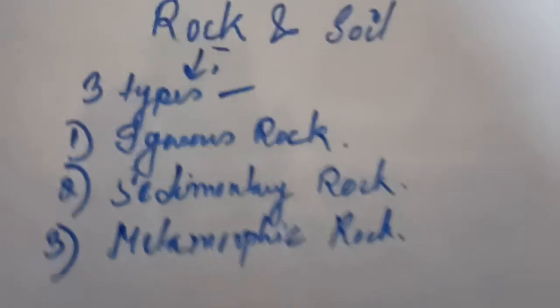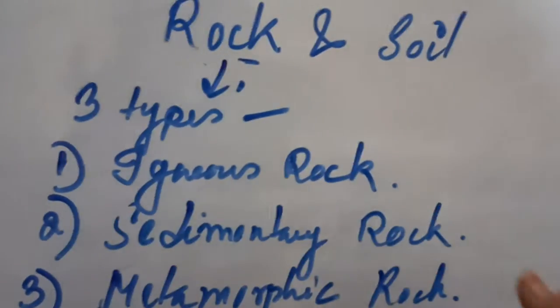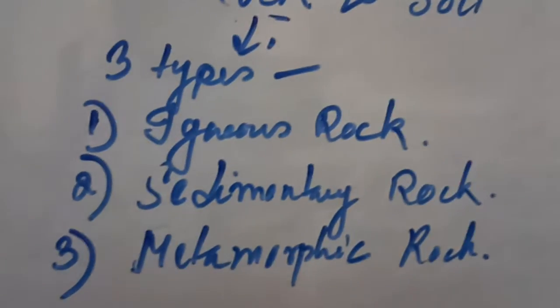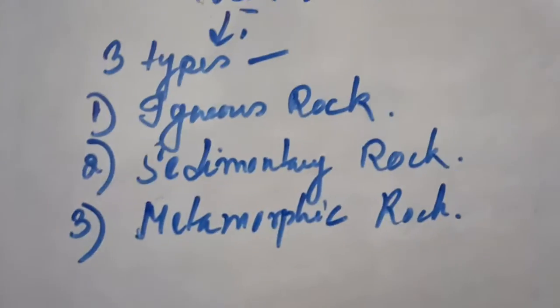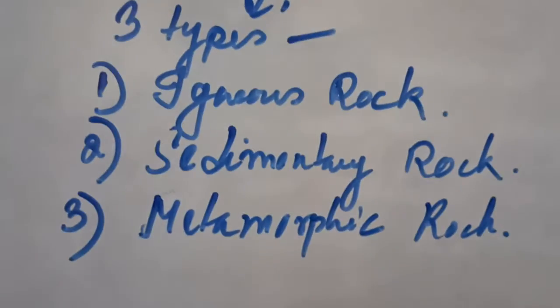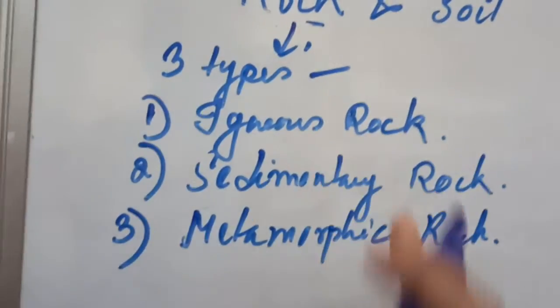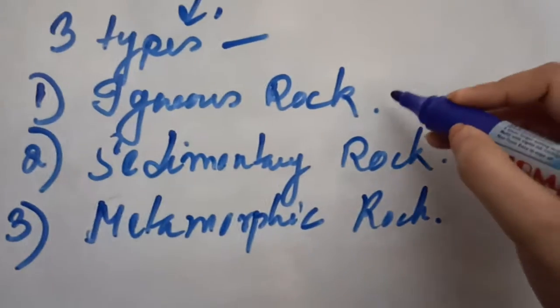So these are the main three types of rocks that are present on the earth's surface. This classification of the rock is based on the way of formation of the rocks, the time when these rocks have been formed. Based on that, the name has been given. Now let us see the first type of rock.